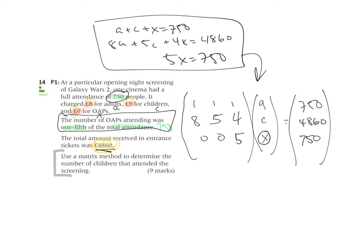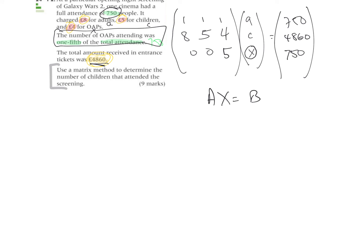But if we consider this, this is AX equals B. If I want to solve for X, and I do, because then I can find the children, I then am going to multiply by the inverse of A on both sides. I plug that in, and X will be A inverse times B.